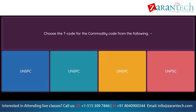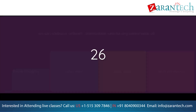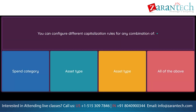Question: Choose the T-code for the commodity code from the following. Option 1: UNSPSC. Option 2: UNSPSC. Option 3: UNSPSC. Option 4: UNSPSC. Question: You can configure different capitalization rules for any combination of. Option 1: spend category. Option 2: asset type. Option 3: asset type. Option 4: all of the above.